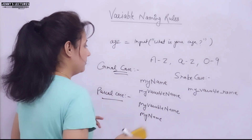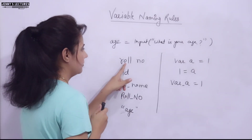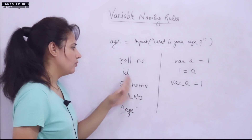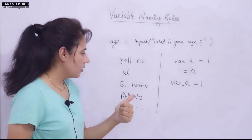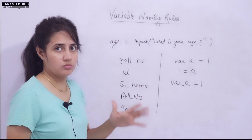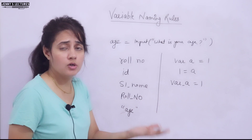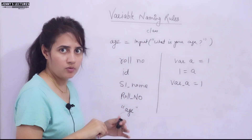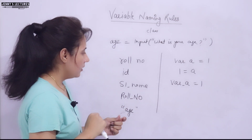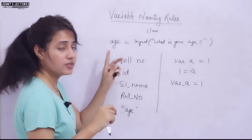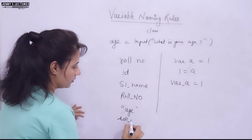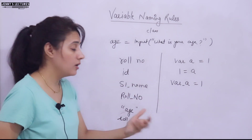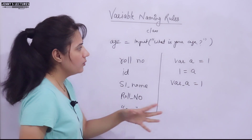Here's an assignment: tell me in the comments whether these variable names are valid or invalid — 'raw number' with a space, 'ID', 's1_name', 'no_number' with underscore, and 'age' with double quotation marks. Also, one more rule: there are reserved words in Python that cannot be used as variable names, just like in C or C++. For example, 'class' is a reserved word and cannot be a variable name. Finally, Python is case sensitive, so 'Raw_number' with capital R and 'raw_number' with small r are considered two different variable names.